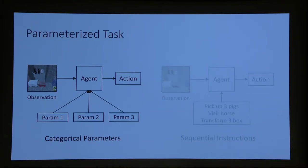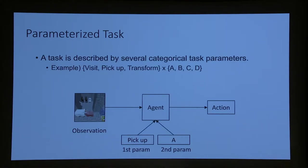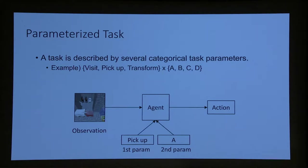Focusing on categorical parameters: the task is defined by the cross product of a parameter space — for example, verbs like 'visit,' 'pick up,' 'transform,' and object names like A, B, C, D. The agent is given one verb and one noun, and has to decide what sequence of actions to perform depending on the observation. We'll give only a subset of parameterized tasks during training and test generalization.